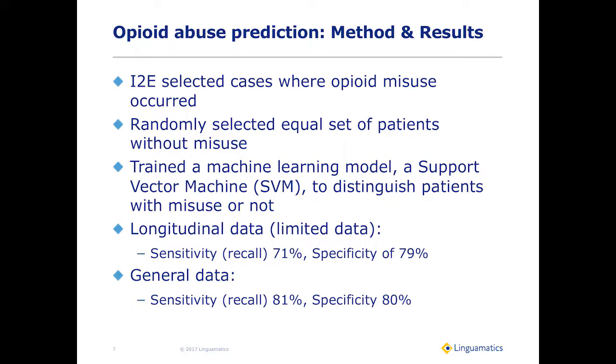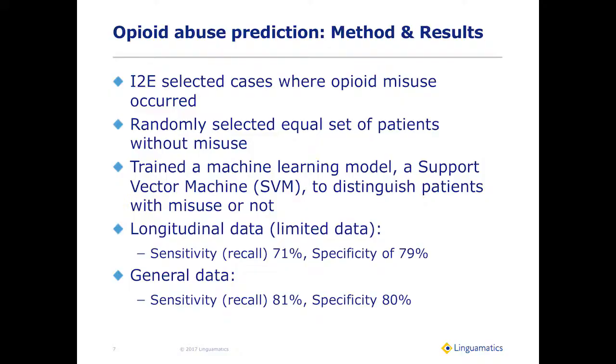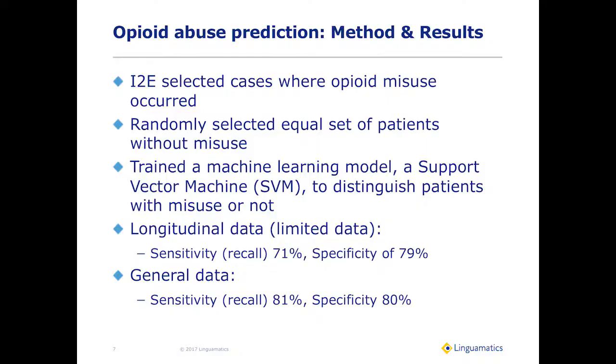We selected cases where opioid misuse occurred and randomly selected equal sets of patients without misuse, then trained a machine learning model — in this case a support vector machine (SVM) — to distinguish patients with misuse or not. The longitudinal data results showed 71% recall and a specificity of 79%. The difference between the two result sets is more to do with quantity of data than the actual method. Even so, these are pretty good percentages — rather better than we would have expected for this task.